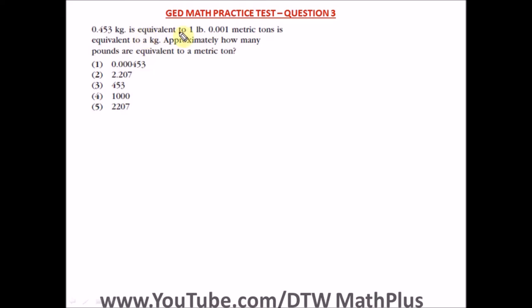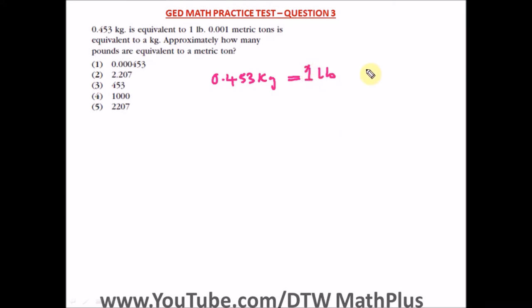Alright, so let us interpret this question. We have 0.453 kg is equal to 1 pound. And also we have 0.001 metric tons — that is 1 metric ton — is equal to 1 kg.